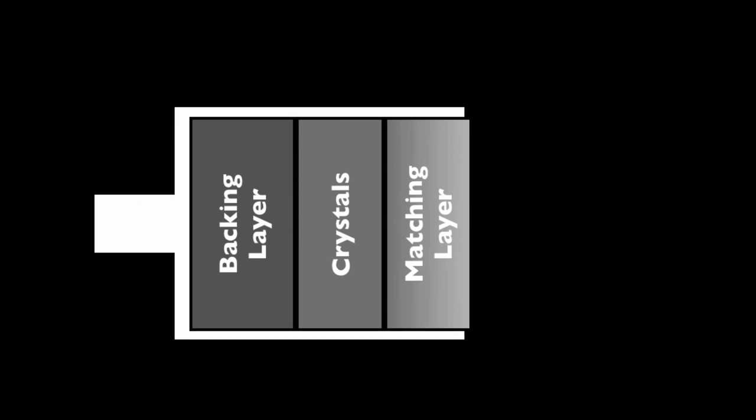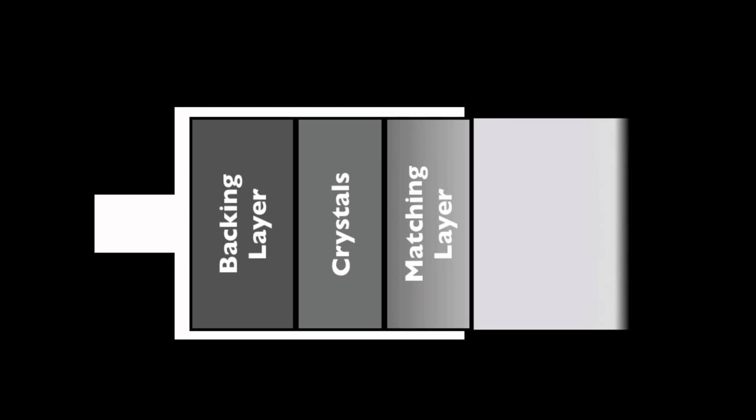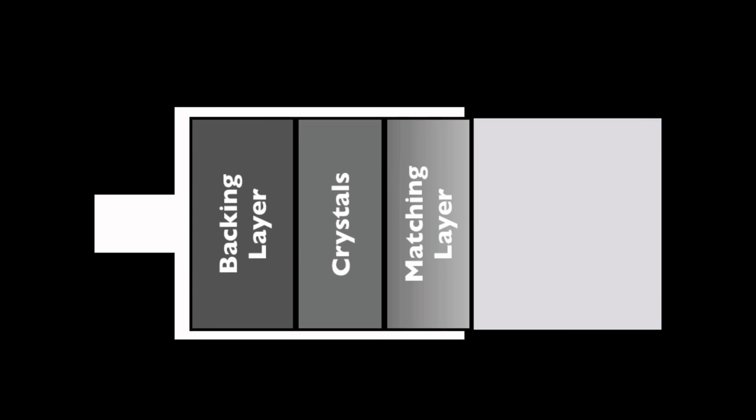The matching layer is that soft spongy layer on the surface of the probe. Electricity stimulates the crystals to produce the pressure wave, which exits through the matching layer into the subject. Broadband transducers can produce multiple different frequencies rather than a single frequency like in older systems, and you can select a different frequency.